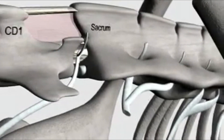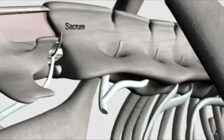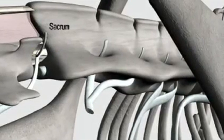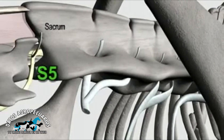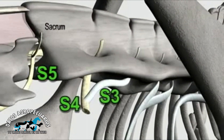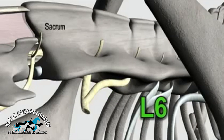Typically, three to six milliliters of anesthetic is used to block sacral nerves five, four, and three, while the lumbar nerves are left unblocked to avoid problems with patient locomotion and hind limb function.